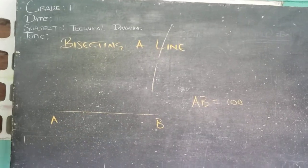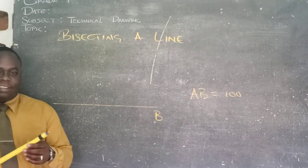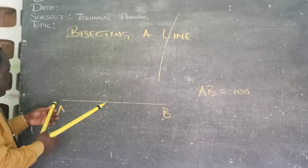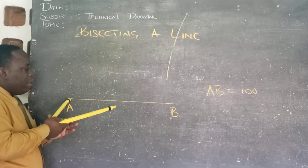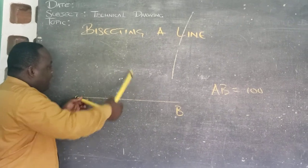Now having our given line AB, then what we are going to be doing is that we are going to be using our compass. And at A, we are going to be opening to more than half the length of our line.